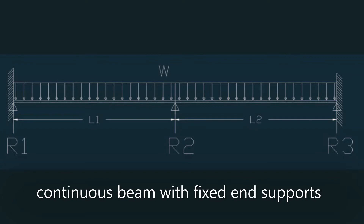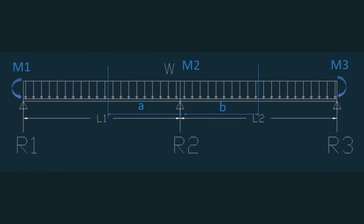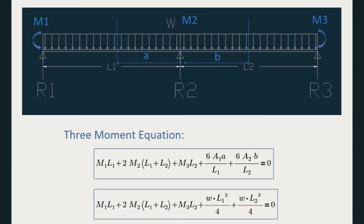Say we have a continuous beam with fixed ends, a moment length of two moments. This beam has reaction forces R1, R2, and R3. It also has fixed end moments M1 and M3, with an internal moment M2. The three moment equation is defined by a formula where the expression 6A₁ times a over L₁ represents the moment contribution of the load carried by the beam on the left side, and 6A₂ times b over L₂ represents the moment contribution on the right side. For a uniformly distributed load, this can be rewritten as WL³ over 4.